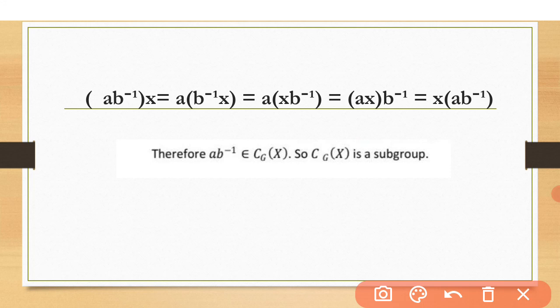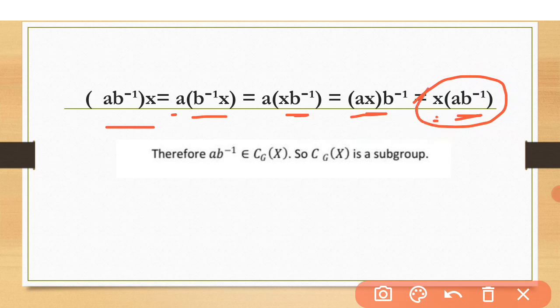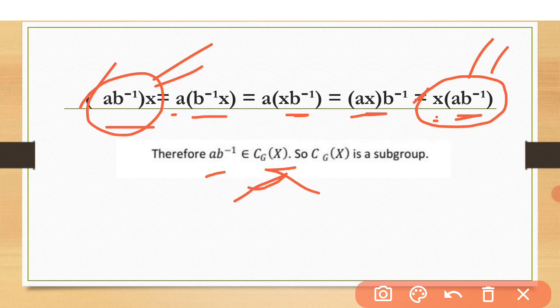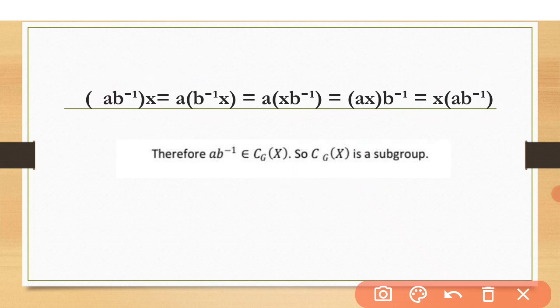Similarly, computing AB inverse times X, we change brackets using associativity: A times B inverse X, then exchange X and B inverse to get AX B inverse, then rearrange to X times AB inverse. This shows AB inverse also belongs to the centralizer of X. Hence it is proved that the centralizer of X — the elements of G permutable with all elements of X — form a subgroup of G. I hope you understood. Thank you so much.